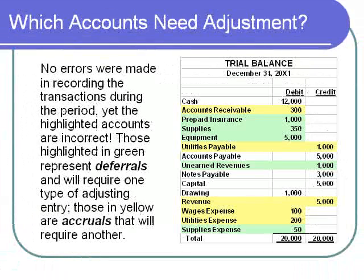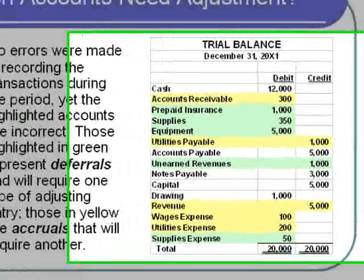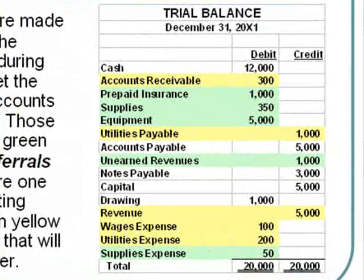Our trial balance is displayed on this screen, and you'll note that many of the accounts are highlighted. Highlighted accounts are the ones that need to be adjusted — events have happened that did change these account balances, but they have not yet been recorded. The highlighted accounts in green are ones that represent deferrals; the ones in yellow are accruals. These terms will be explained further in the remainder of the presentation.